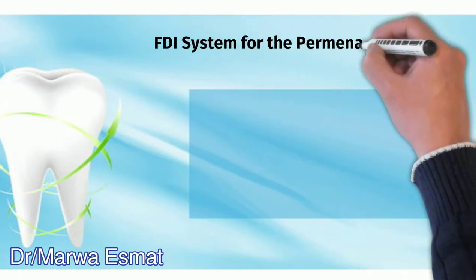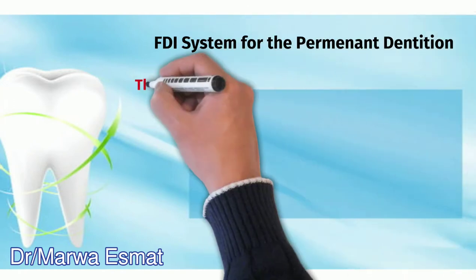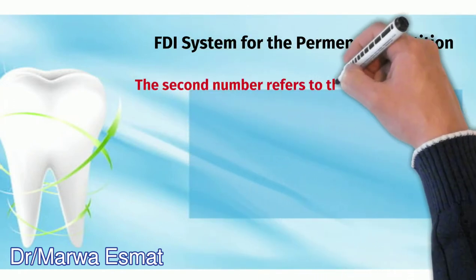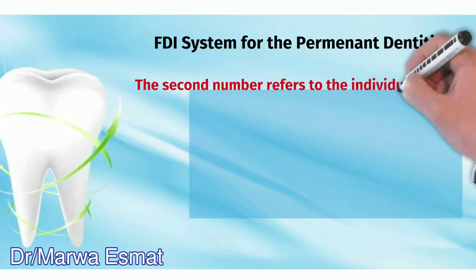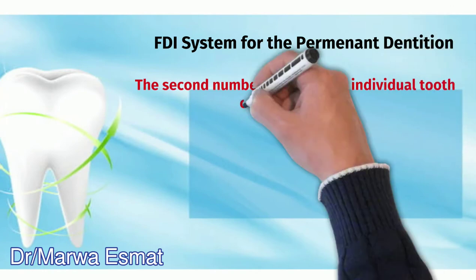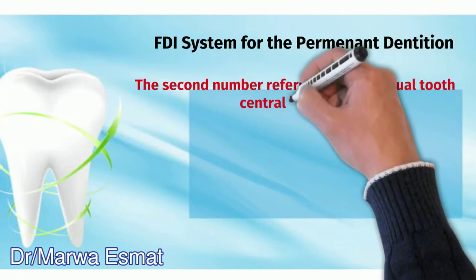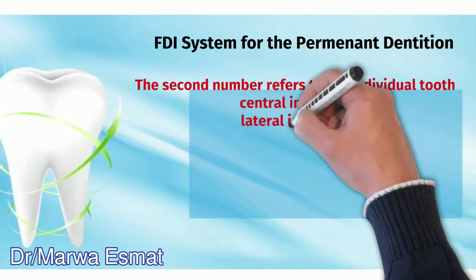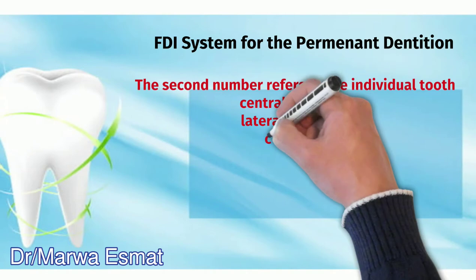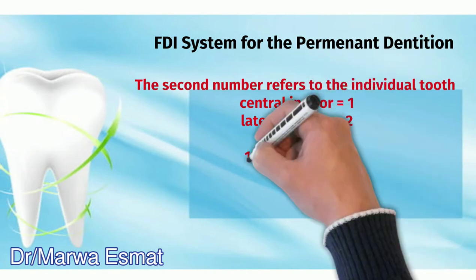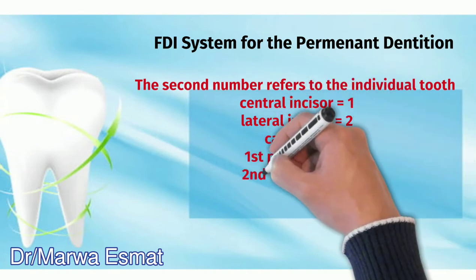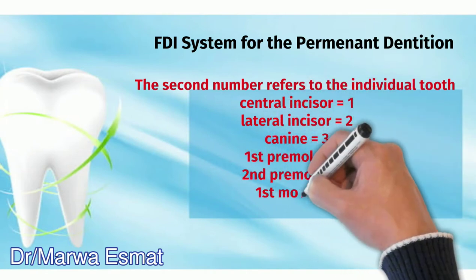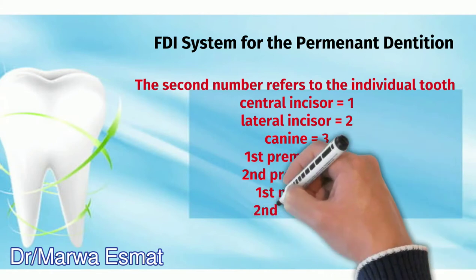The second number refers to the tooth number. It may be from 1 to 8 according to the tooth: central incisor, lateral incisor, canine, first premolar, second premolar, first molar, second molar, and third molar.